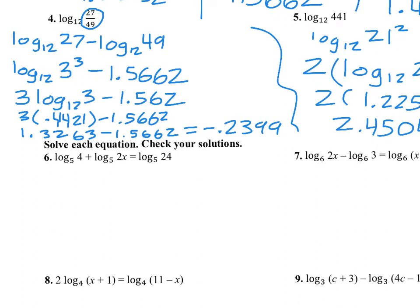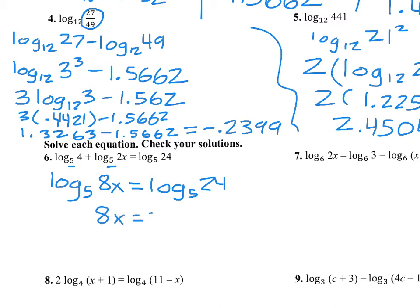Now we're going to use these properties to solve equations. Using the product property but working backwards — we have addition, so you need to make sure these logs have the same base. Both have a base of 5 and we're adding them, so we can multiply their arguments together: 4 times 2x is 8x. Since the bases are equal, the arguments have to be equal, giving x equals 3. The directions say to check your answer — you need to make sure all the arguments are not negative or zero, so you have to check that the arguments are all positive.